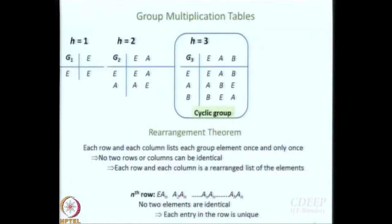We have also discussed group multiplication tables. A group of H=1 is trivial — the group by itself, like a very lonesome man. A group of 2 with E and A is a little more interesting. A group of 3, E, A, B — we found that it is a cyclic group and an abelian group. An example from our point groups of a cyclic group of order 3 would be C3.